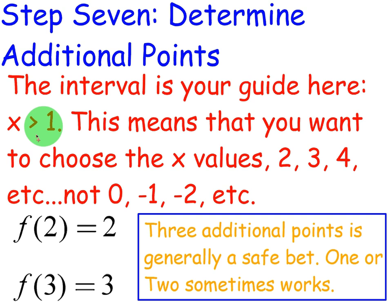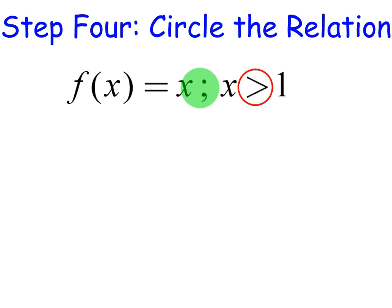I know it's going to be a line because it's f of x equals x. So I'm going to plug in 2, which is bigger than 1, and 3, which is bigger than 1. And I'll see f of 2 is 2 and f of 3 is 3 because the function is f of x equals x.